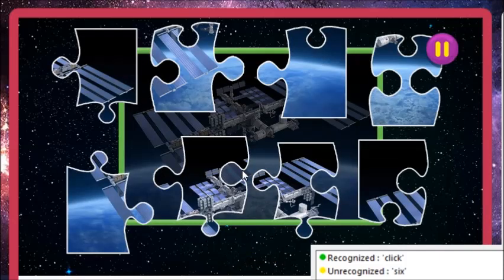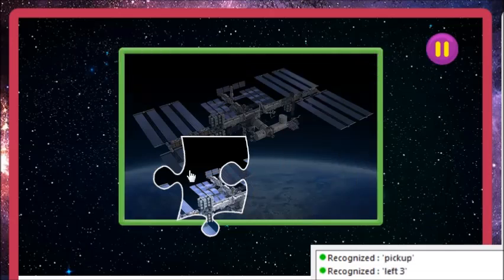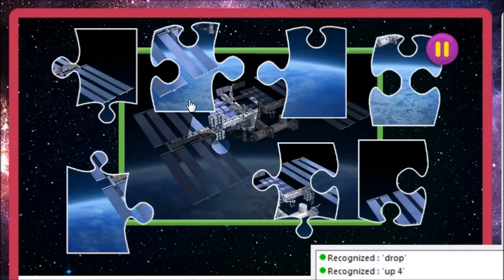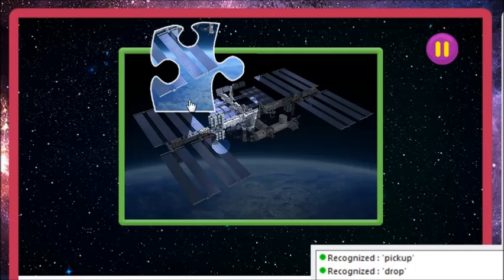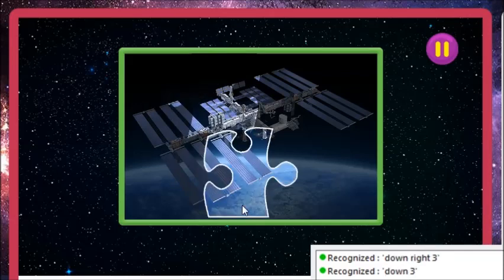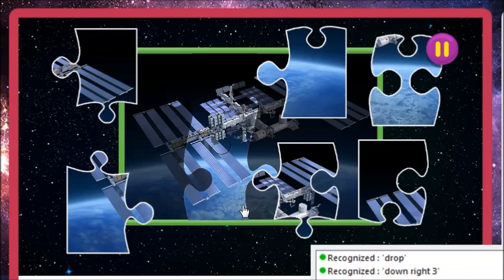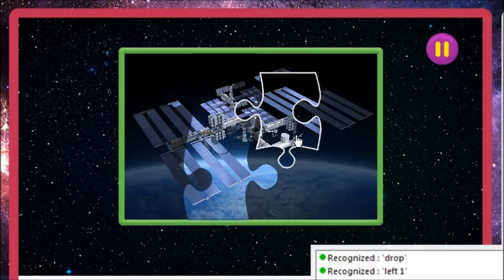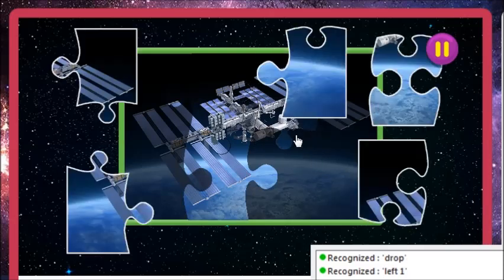Drag and drop the puzzle pieces onto the board to create the picture. Left 3. Pick up. Up 4. Drop. You're really good at this! Pick up. Down 3. Down right 3. Down right 3. Right 4. Pick up. Up 4. Left 1. Drop. Well done!